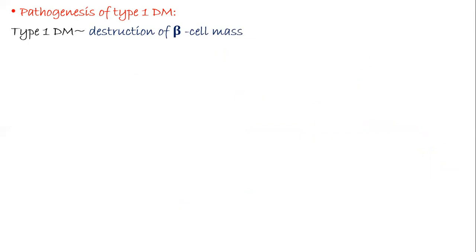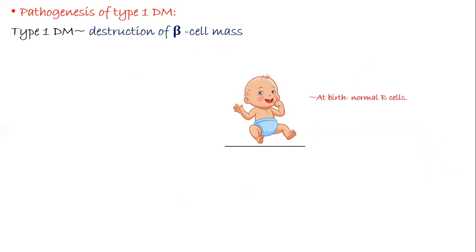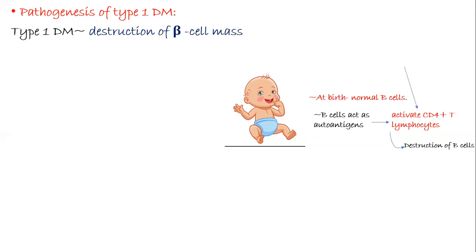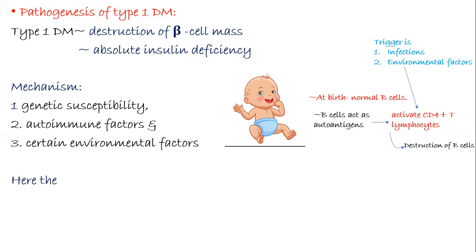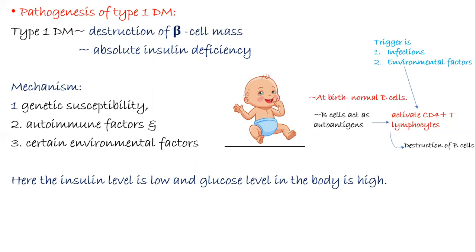Now we'll look at the pathogenesis of type 1 diabetes mellitus, which occurs due to destruction of the beta cell mass. When an individual is born, they have normal beta cells. But as the person ages, the beta cells act as autoantigens and activate CD4+ T lymphocytes, which causes destruction of the beta cells. The triggering factors are infection and environmental factors. This results in absolute insulin deficiency. The mechanism includes genetic susceptibility, autoimmune factors, and certain environmental factors.